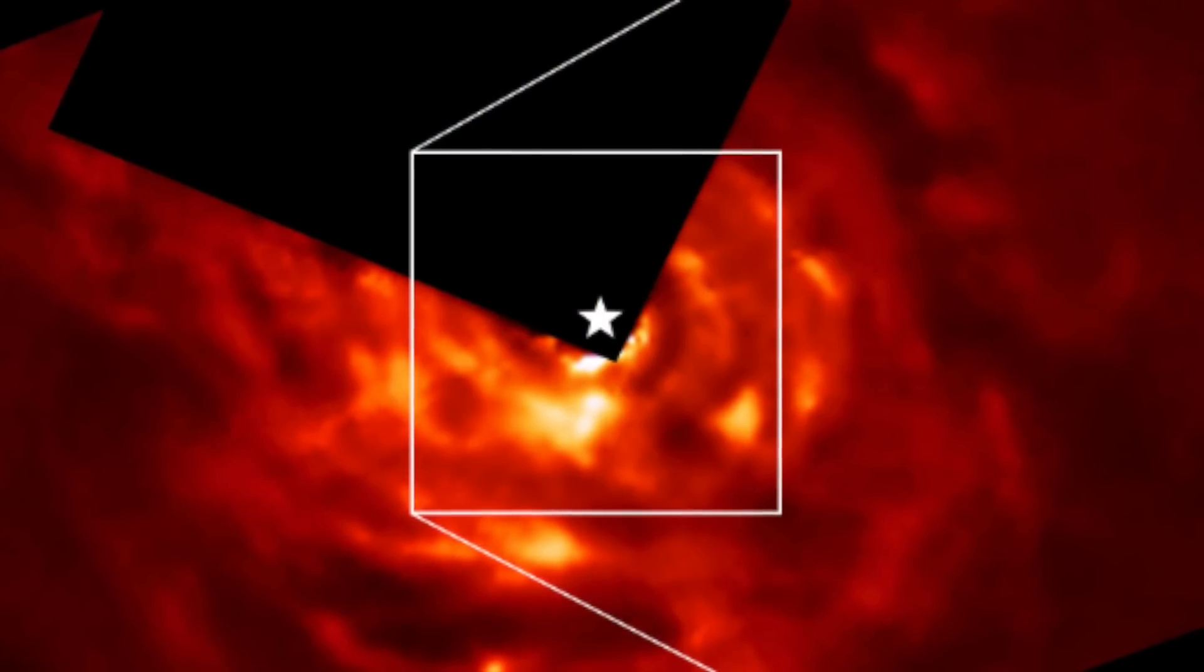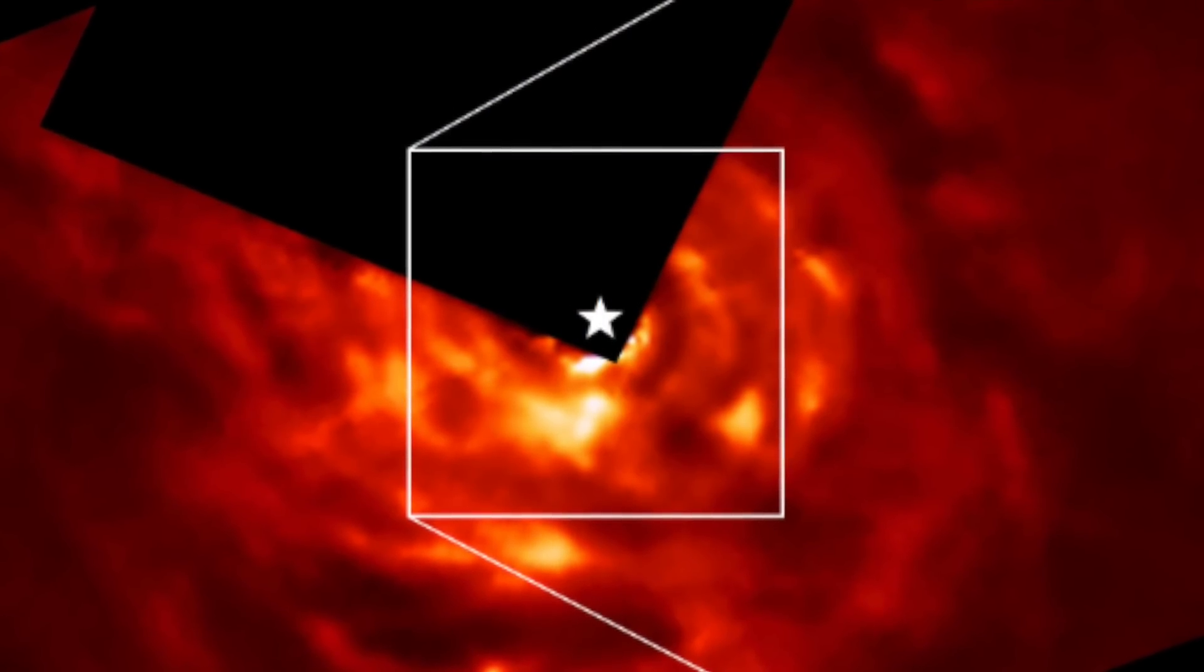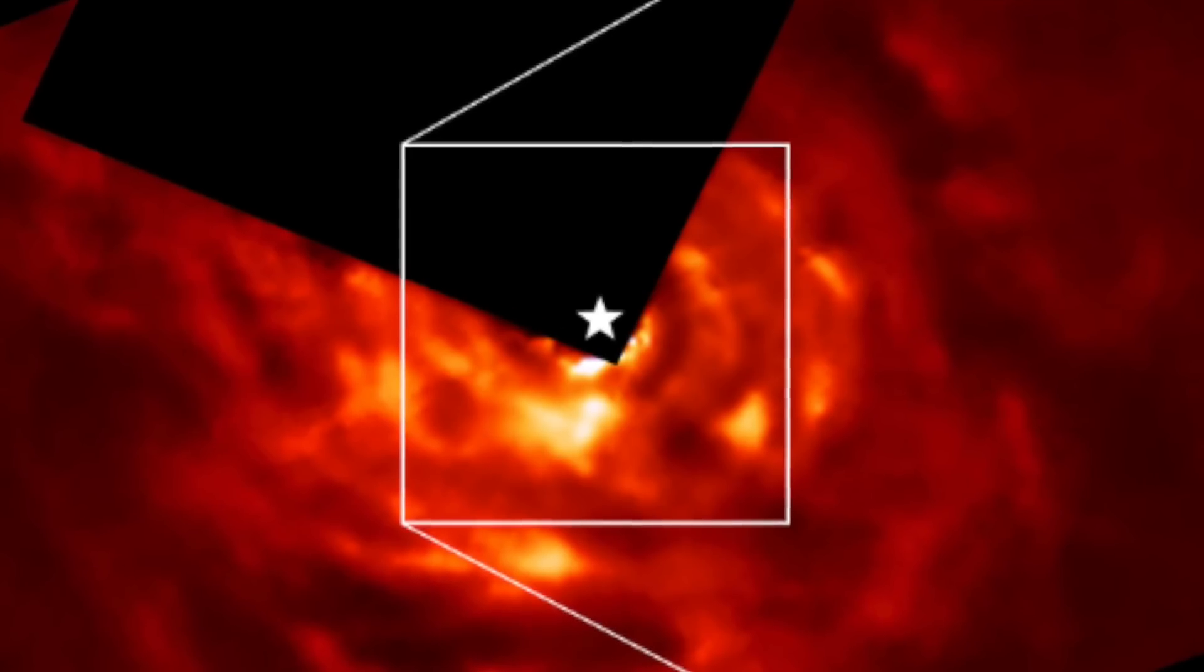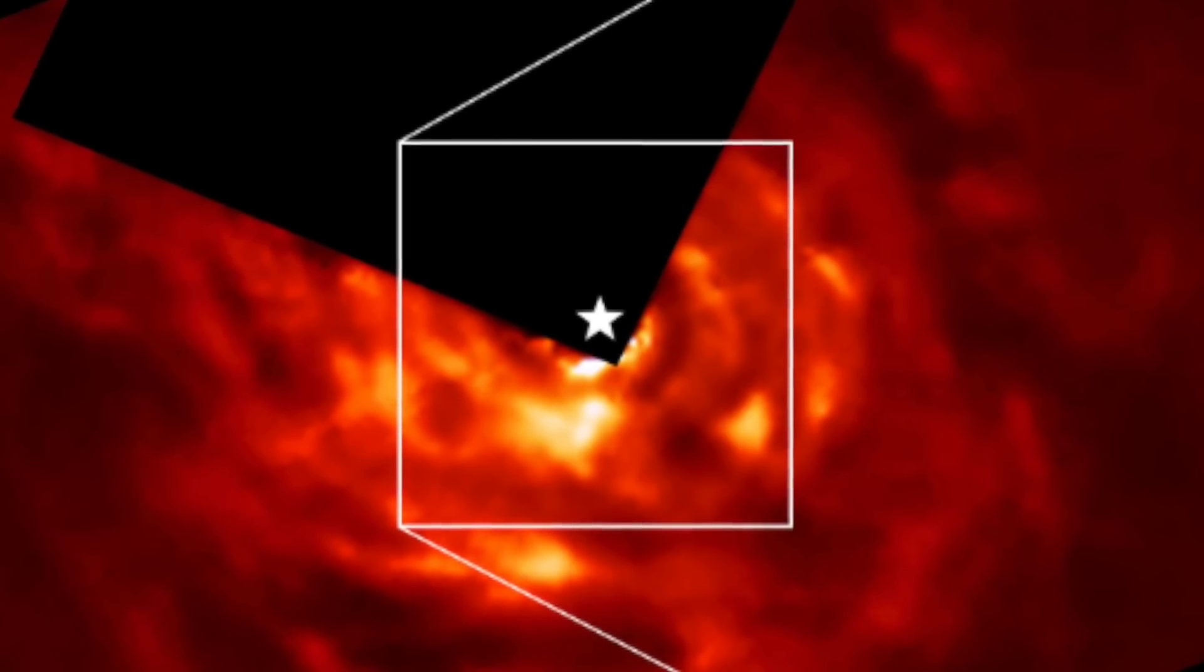Hubble finds a planet forming in an unconventional way. The Hubble telescope has recently photographed the creation of a Jupiter-like planet named AB Aurigae b. NASA described the creation process as intense and violent. The planet is surrounded by a disk of dust and gas, forming a spiral structure around a young star, theorised to be around 2 million years old.